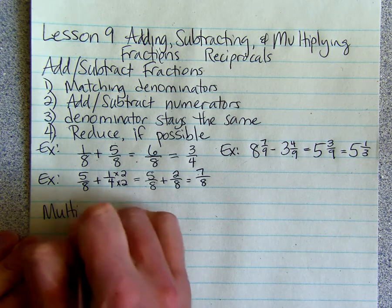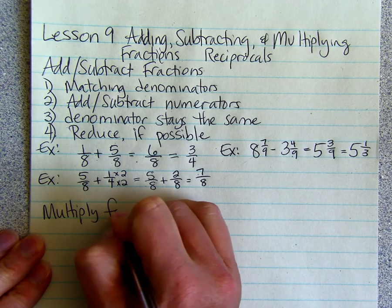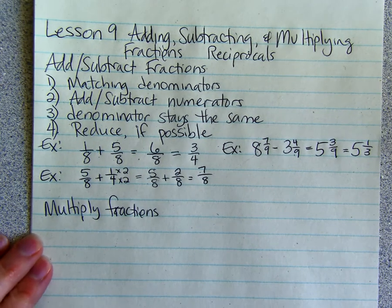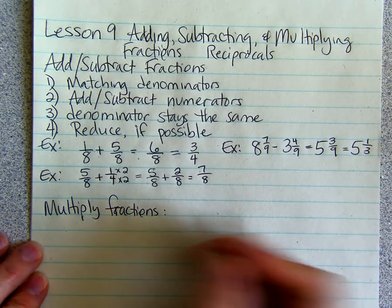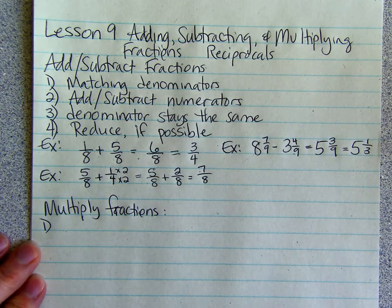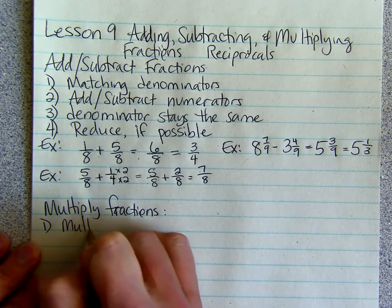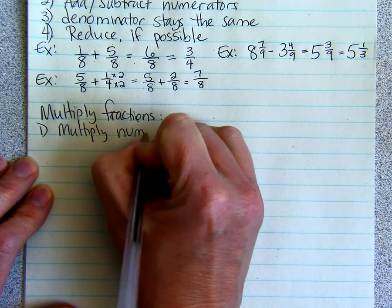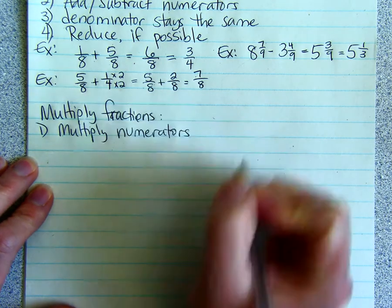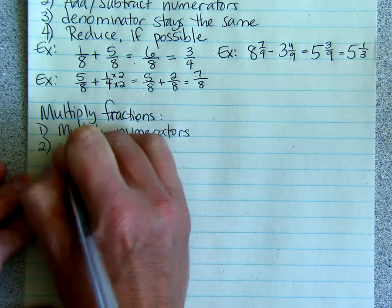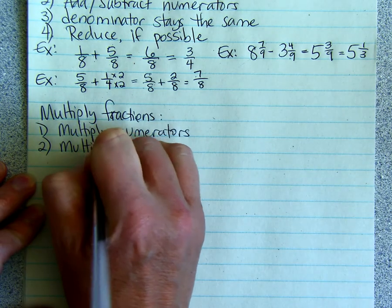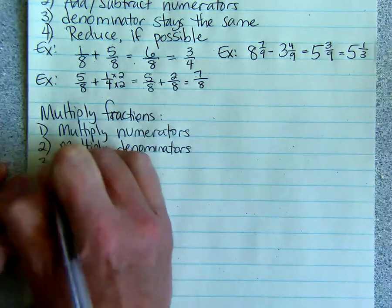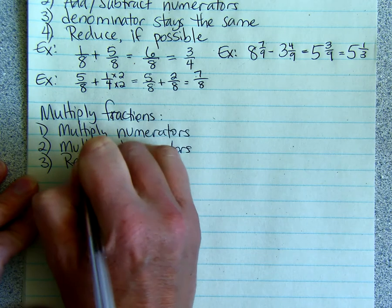When we multiply fractions, we multiply the numerators. And we multiply the denominators. And finally, we reduce if possible.